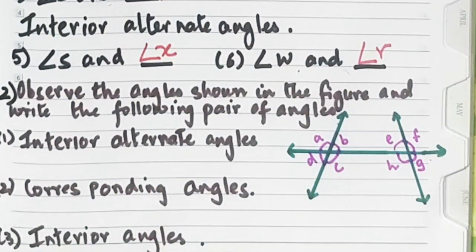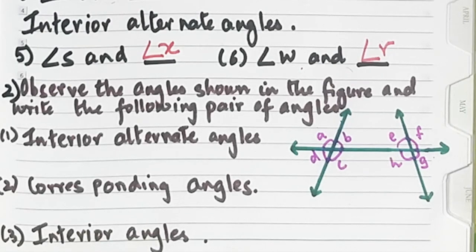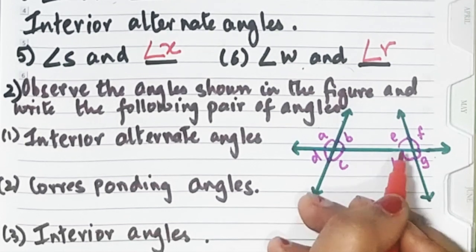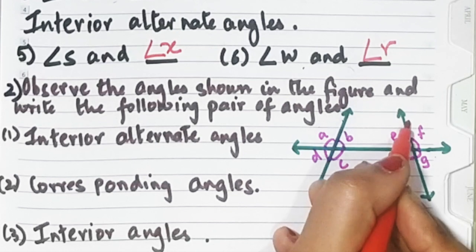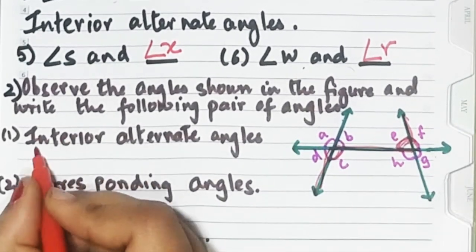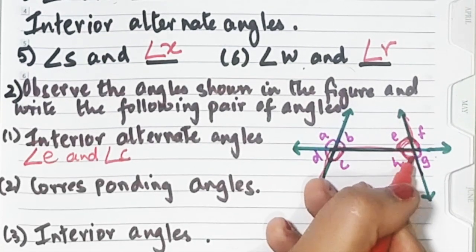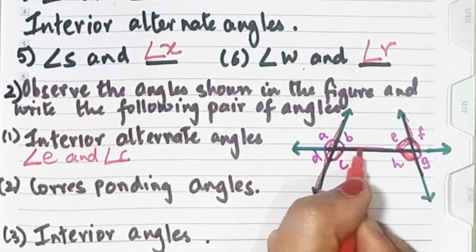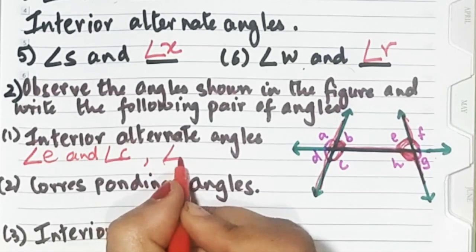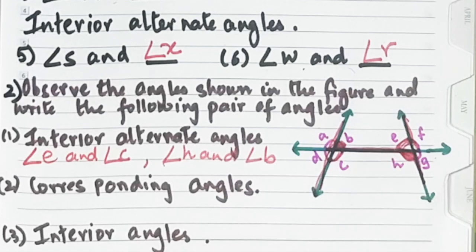Sum number two: observe the angles shown in the figure and write the pairs of angles. For interior alternate angles, we use the letter Z. Angle C and angle E form a Z, so they are a pair. Angle H and angle B also form a Z. So there are only two pairs of interior alternate angles: angle E and angle C, and angle H and angle B.